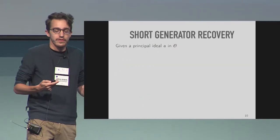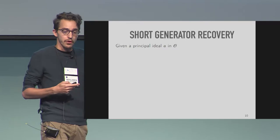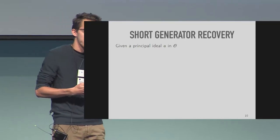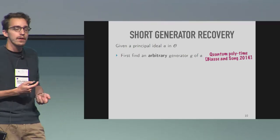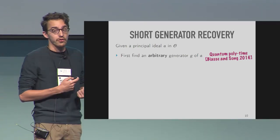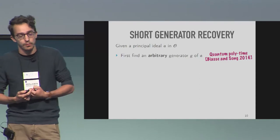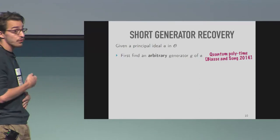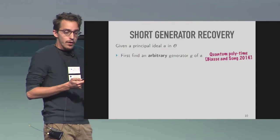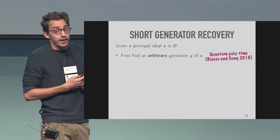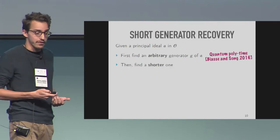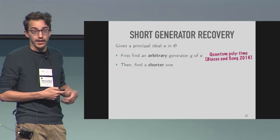You're given a principal ideal A, you know it has a generator but you're not given one. So the first step is to find an arbitrary generator — already a non-trivial problem, but it can be solved in quantum polynomial time, a result of Biasse and Song in 2016. But this algorithm finds a generator that is usually extremely large, so the second step consists in finding a shorter one.